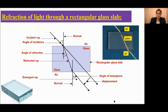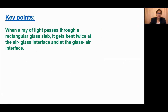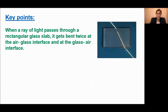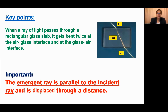So, what are the key points you learn here? When a ray of light passes through a rectangular glass slab, it bends twice — at the air-glass interface and the glass-air interface. Also, another important point is the emergent ray is parallel to the incident ray and is displaced through a distance.